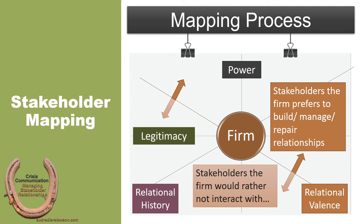Relational valence tells us who an organization's most favored stakeholders are, but not necessarily which stakeholders they will interact with the most. Therein lies the key distinction between legitimacy and valence. Both are important to know in mapping stakeholders, but these are very different ways to understand an organization's disposition towards a stakeholder.